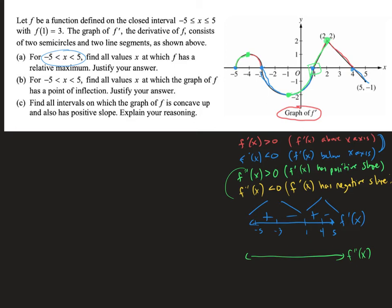So it looks like the slopes change sign at x = -4, x = -1, and x = 2. Then I make my sign line showing whether the slopes are positive or negative.